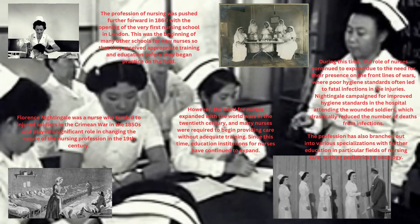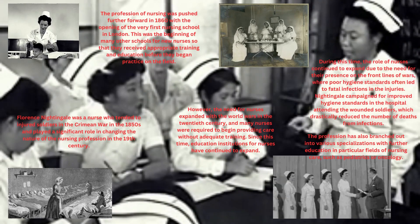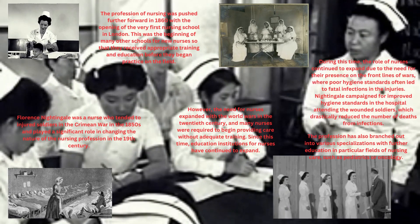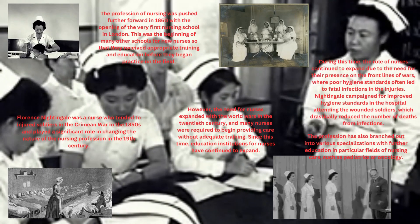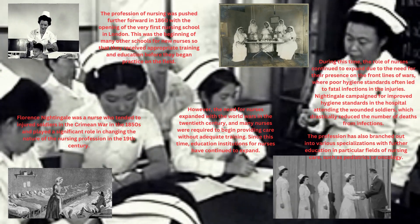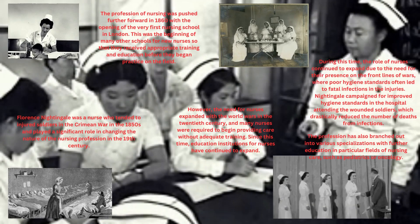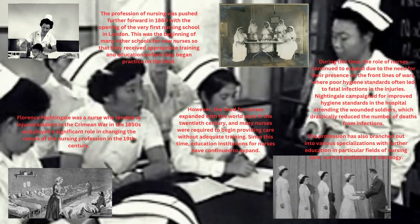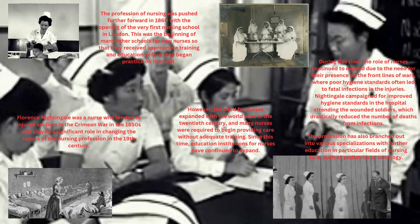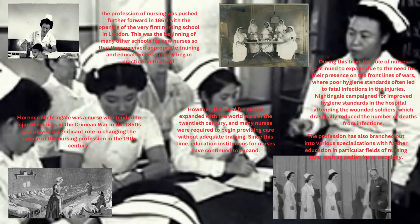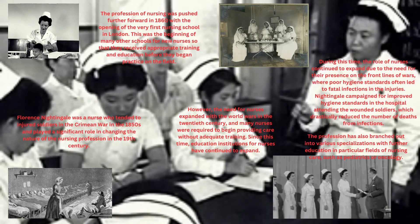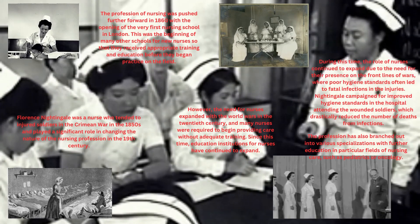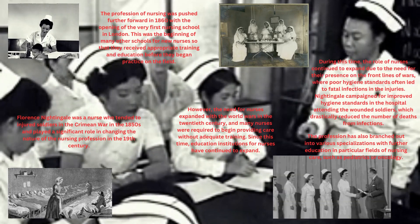The profession of nursing was pushed further forward in the 1860s with the opening of the very first nursing school in London. This was the beginning of many other schools for nurses so that they received appropriate training and education before they began practice in the field. However, the need for nurses expanded with the World Wars in the 20th century and many nurses were required to begin providing care without adequate training. Since then, education institutions for nurses have continued to expand, and the profession has branched out into various specializations with further education in particular fields of nursing care, such as pediatrics or oncology.